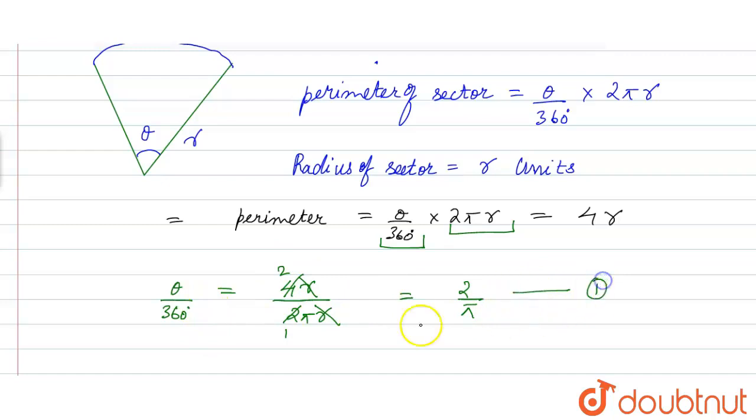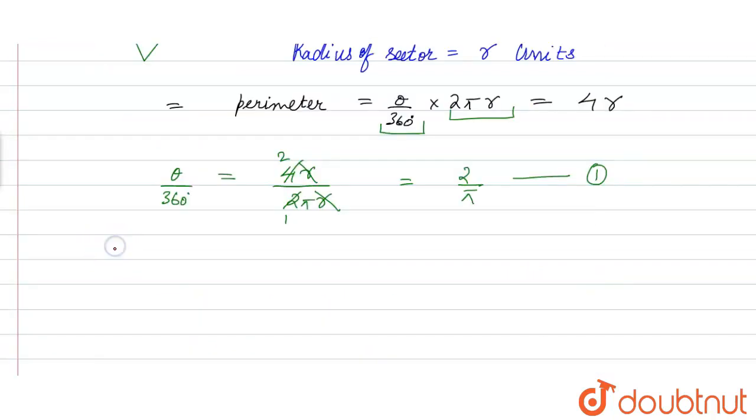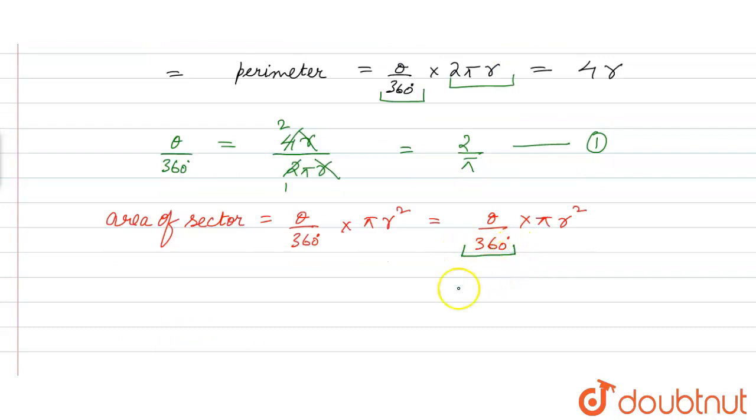So we have to find the area of sector. That is area of sector is equal to theta by 360 degrees, where theta is the angle of sector, into πr². Where r is the radius of sector, putting value of theta by 360 from equation 1.